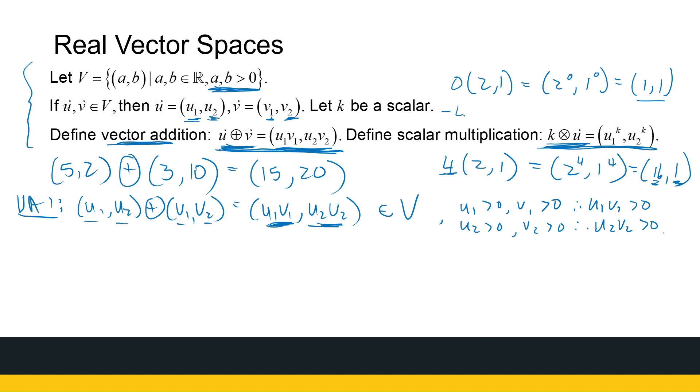What about a negative number? Minus 4. (2, 1). Well, that's 2 to the power of minus 4, 1 to the power of minus 4. Which is just 1 over 2 to the power of 4, 1 over 1 to the power of 4. So again, positive.